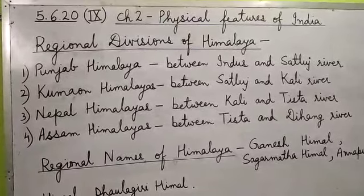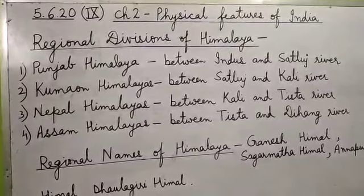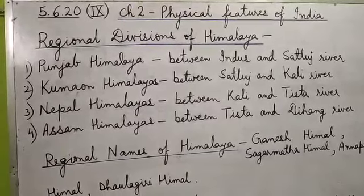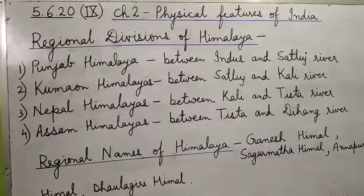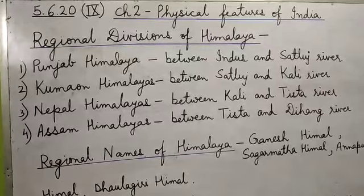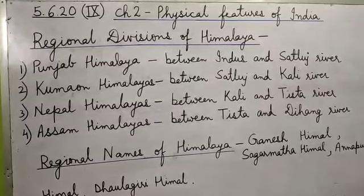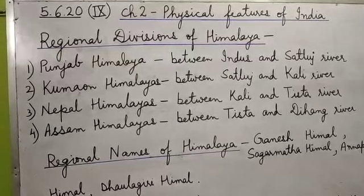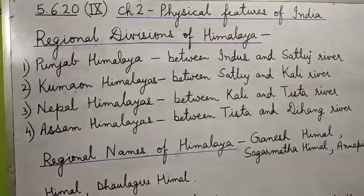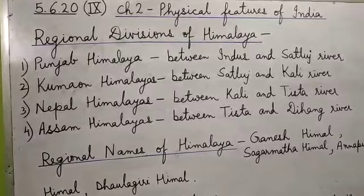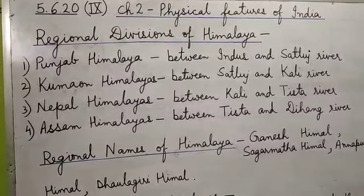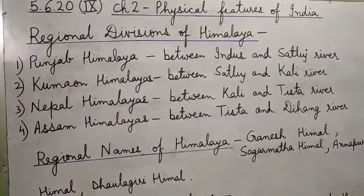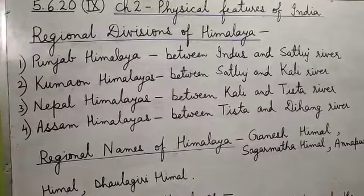Good morning class 9. In our last class, I had finished the parallel ranges of Himalaya, namely Himadri, Himachal and Shivalik. Today we will see the other division of Himalaya, that is the regional division of Himalaya from west to east. These divisions have been demarcated by the river valleys.